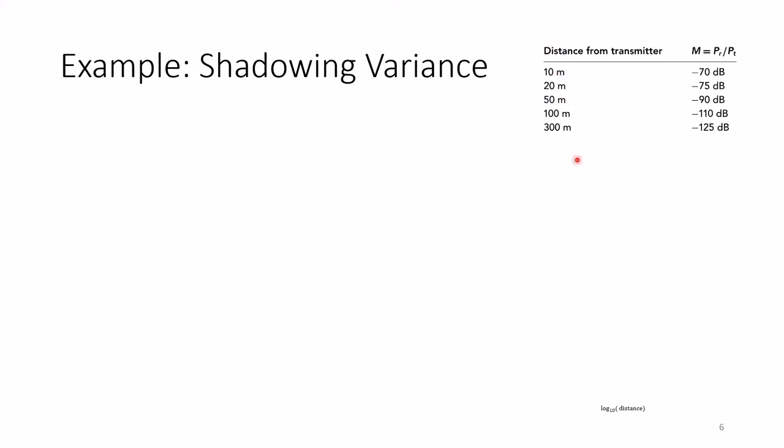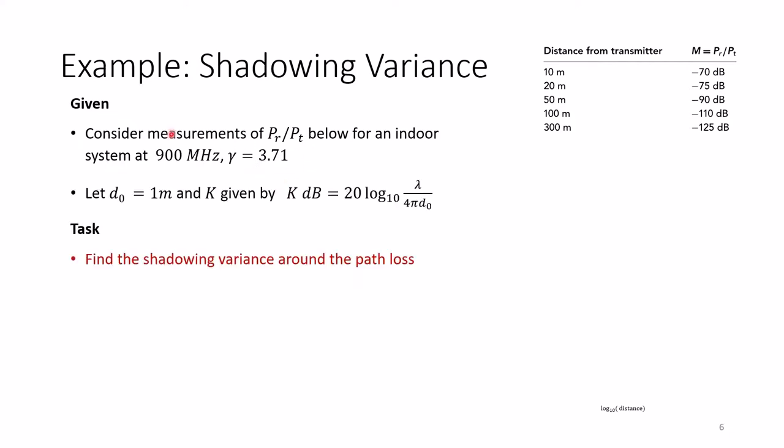The second example here is about shadowing variance. If we have to find sigma rather than use sigma. So we did some experiment with the following distance from the transmitter. And this is the received power. If you sketch the following, and we have done this before. I mean, for similar values, we have done a previous example when we discussed path loss. You can visit that video. We found out that if we plot all the points, we can fit a line. And this line will have k given by the following. And gamma would be 3.71. The path loss exponent is 3.71. So it says here, find, for the same numbers, find the shadowing variance around the path loss.